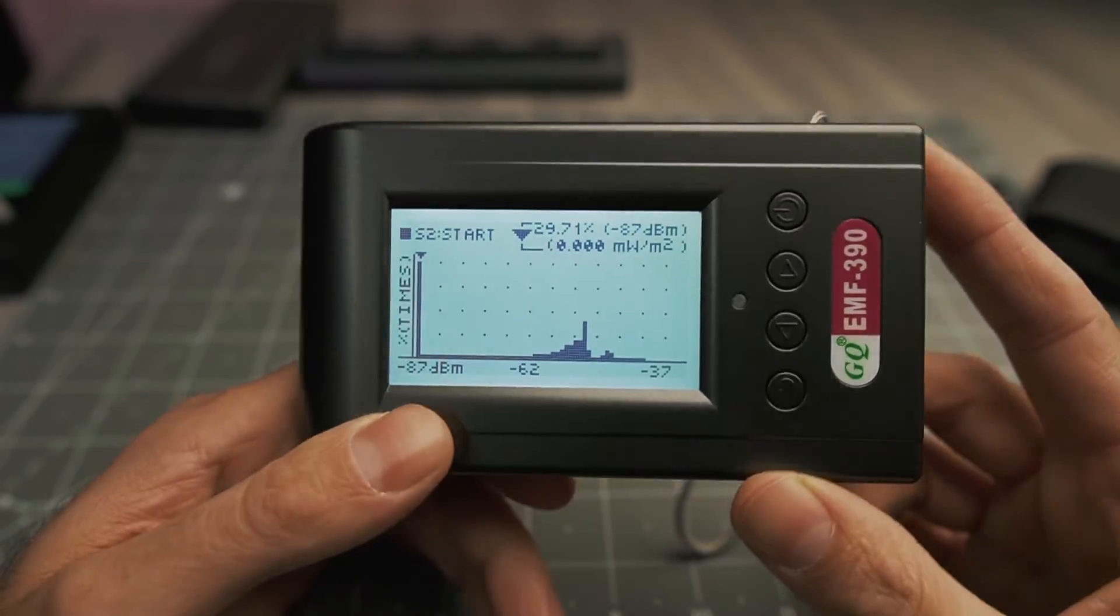So this just gives you a different way of analyzing the RF signals. So whether you just want a quick RF signal reading, if you want to look at the reading over time, or if you want to analyze specific frequencies, the EMF 390 has a specific screen to allow you to do that.